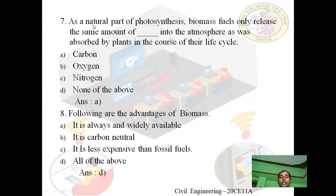Question: As a natural part of photosynthesis, biomass fuels only release the same amount of — into the atmosphere as was absorbed by plants in the course of their life cycle. Option A: carbon. Option B: oxygen. Option C: nitrogen. Option D: none of the above. Answer is A — carbon. Biomass fuels only release the same amount of carbon into the atmosphere as was absorbed by plants in the course of their life cycle.